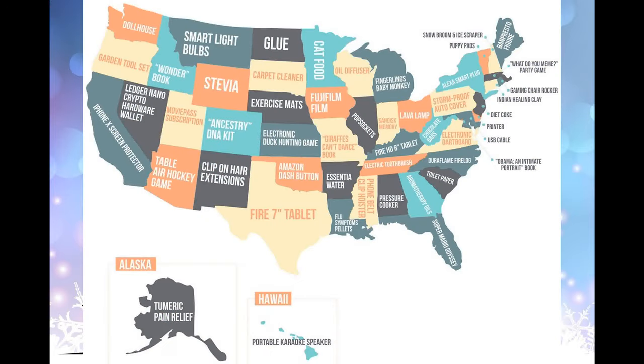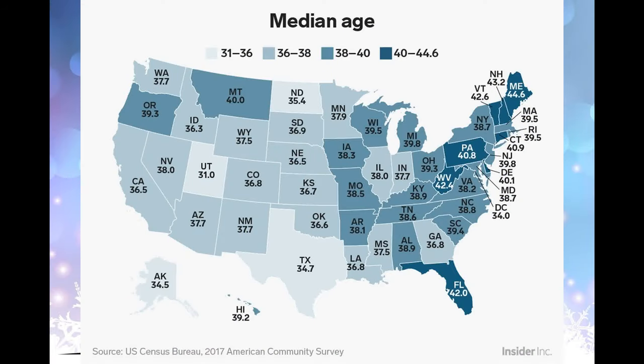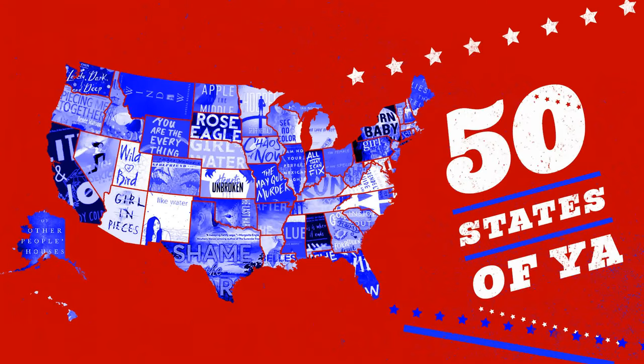The 13 original states came into existence in July 1776, a year after the start of the American Revolutionary War. Upon agreeing to the Lee Resolution and signing the United States Declaration of Independence, prior to these events each state had been a British colony. Each then joined the first Union of States between 1777 and 1781, upon ratifying the Articles of Confederation, the first U.S. Constitution. Also during this period, the newly independent states developed their own individual state constitutions, among the earliest written constitutions in the world.